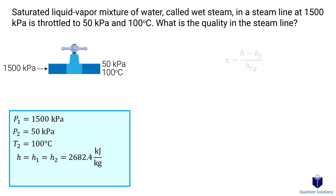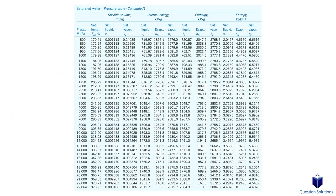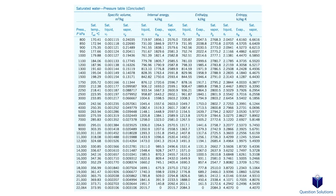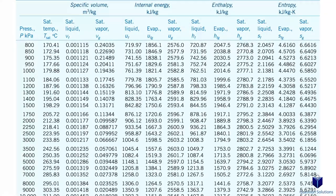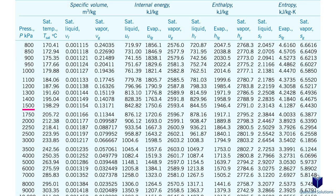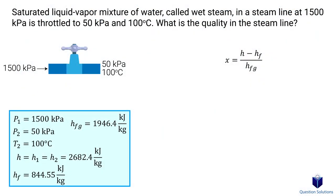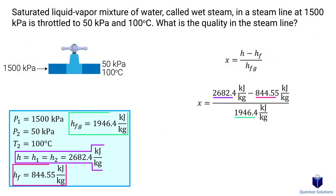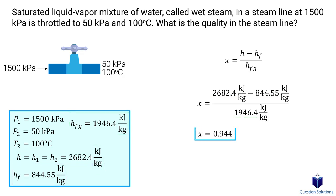Now let's write down the equation for quality. To find the quality we need two enthalpy values, which we can find on a pressure table. We use the pressure at the inlet side, which is 1500 kilopascals, to look up the saturated liquid and saturated vapor enthalpy values. All that's left is to plug these values in, and solving gives us a quality of 0.944.